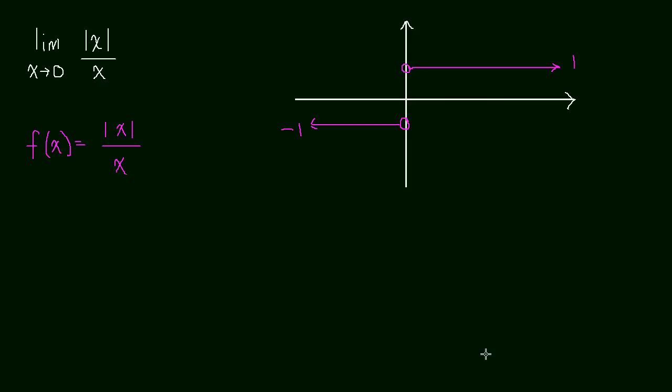Okay. So we did just some quick analysis, and we realized that, you know, this is what this function looks like. Now, as x squeezes in on 0, that's what we're concerned about. As x squeezes in on 0, what do the heights squeeze in on?